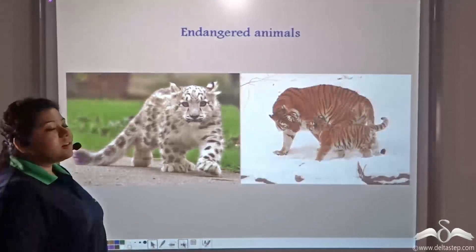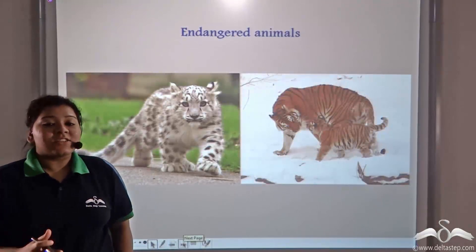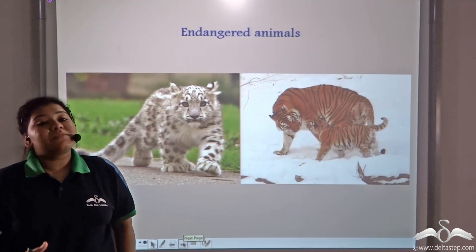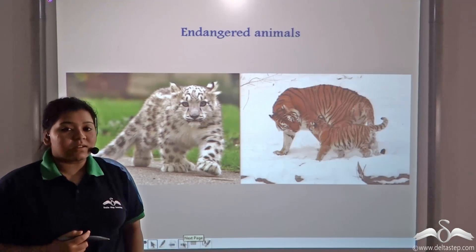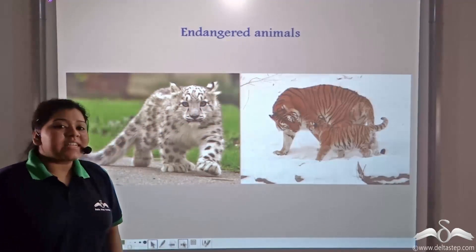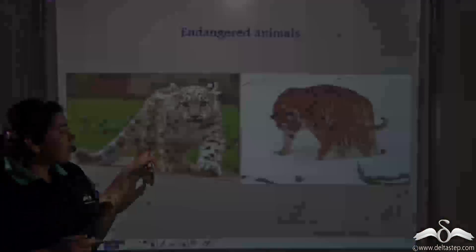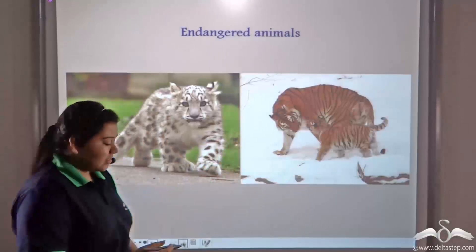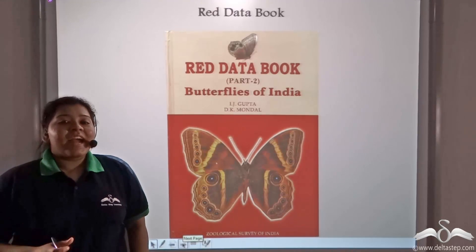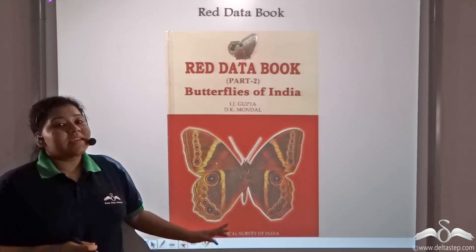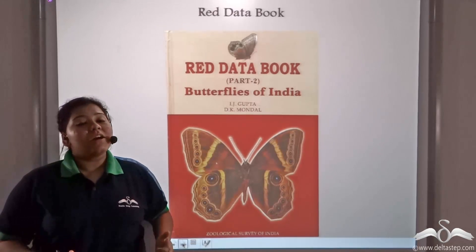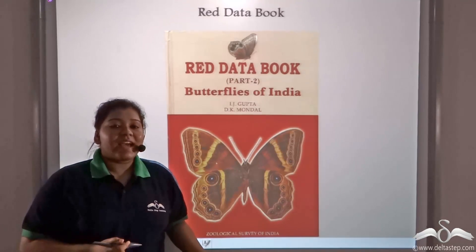The Malabar Giant Squirrel is endangered — its numbers have decreased to a level where it might face extinction in the near future. These are known as endangered animals, and a few other examples are snow leopards and Siberian tigers. Endangered animals have their names listed in the Red Data Book, which is the source book that keeps all the data of endangered plants and animals.